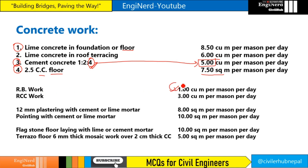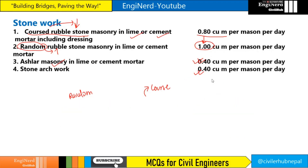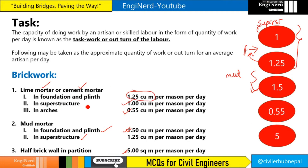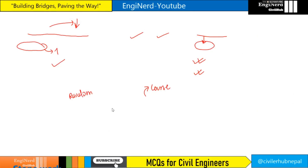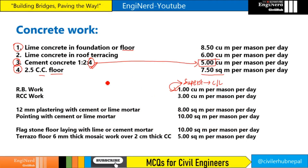Reinforced brick work is 1 cubic meter per mason per day — similar to brickwork in superstructure using lime or cement mortar. RCC work is 3 cubic meter per mason per day. For 12 mm plastering in cement or lime mortar it is 8 square meter — remember 12 mm plastering is near to 8. Pointing with cement or lime mortar is 10 square meter, and flagstone floor laying is also 10 square meter per mason per day.